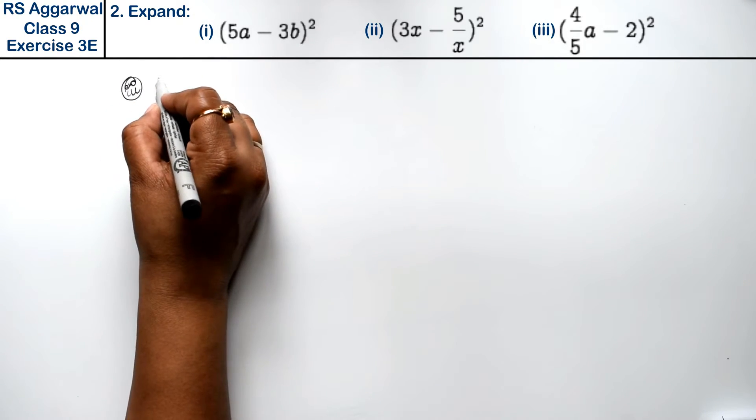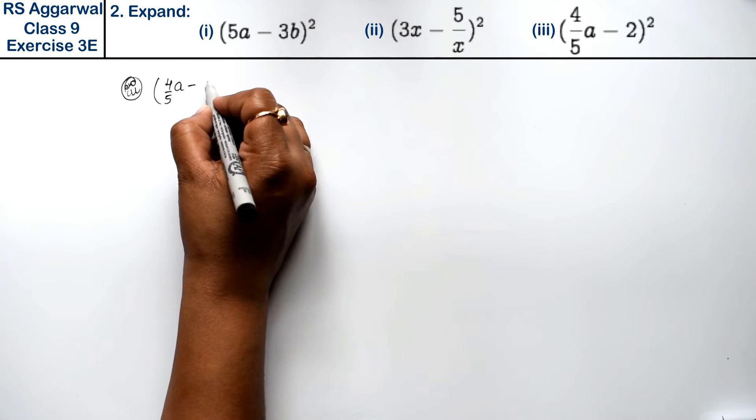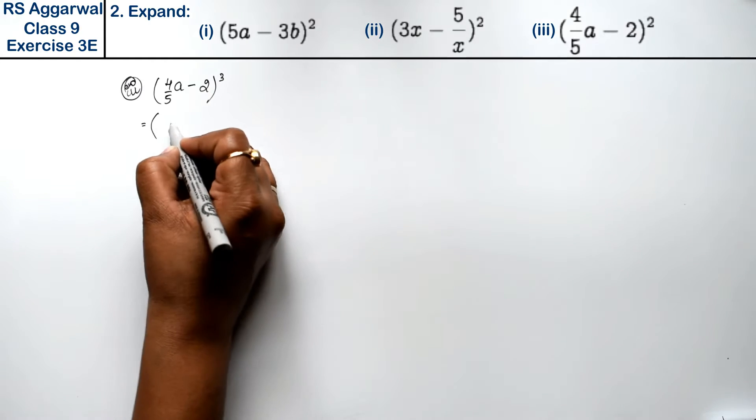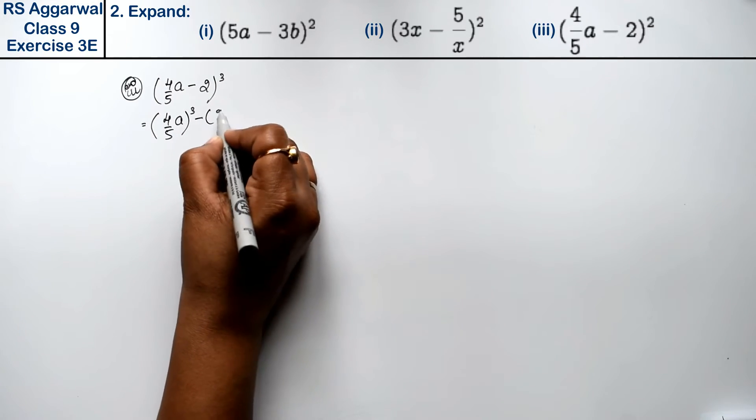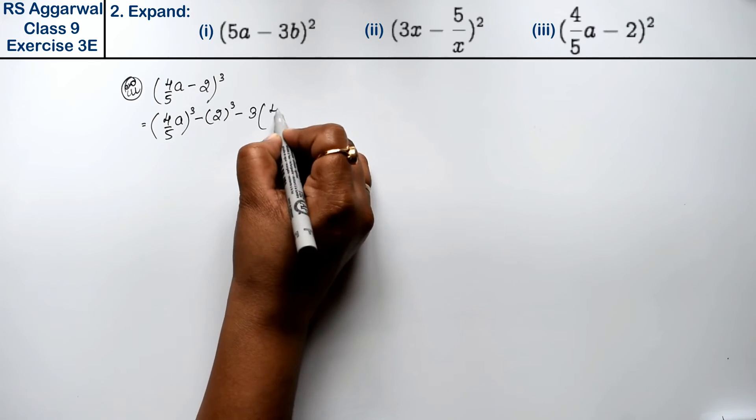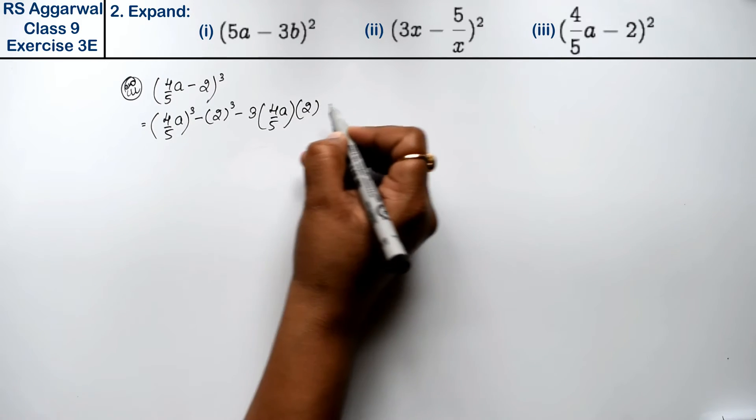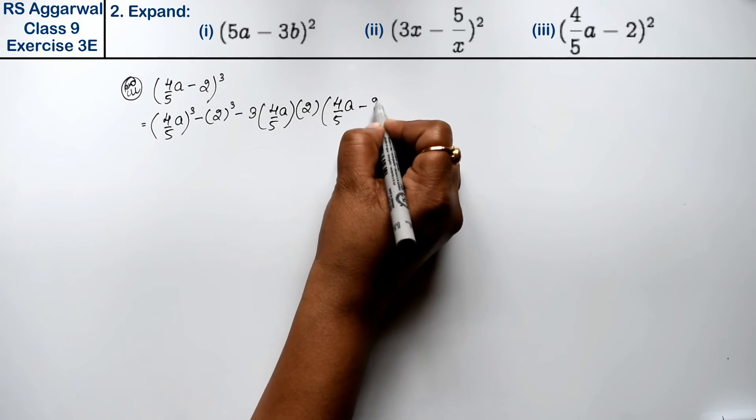Third part is (4/5a - 2) whole cube. (4/5a)³ minus b³ minus 3a into b(a - b).